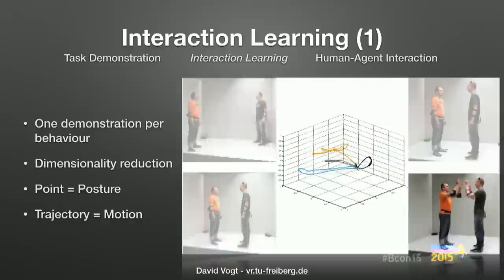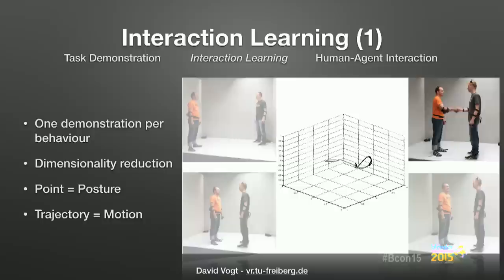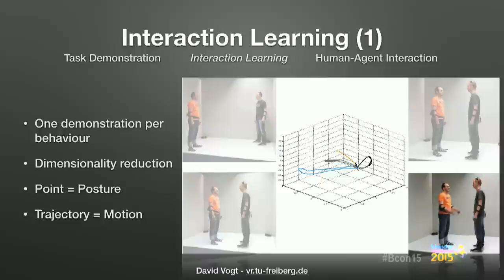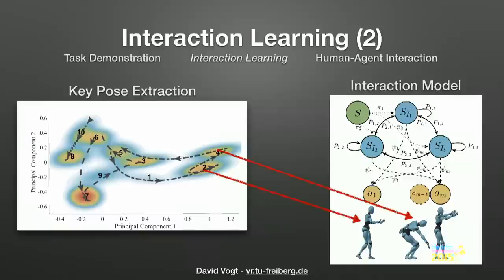In this low-dimensional space, each point corresponds to a posture and a trajectory corresponds to a motion. The same principles of distance apply: if two postures are similar in high-dimensional space, their points in low-dimensional space will be close together. This is what we see here — this is the low-dimensional space of the person wearing the orange T-shirt. All interactions started at the upright position, meaning one point in low-dimensional space, but from there they differed quite drastically.